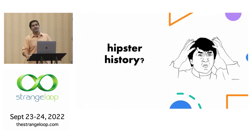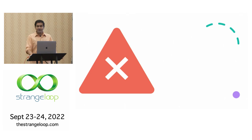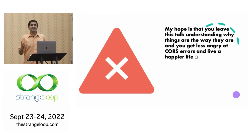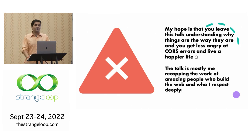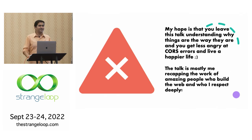The title of the talk is Hipster History. Despite living in Oakland, California, I was not high when I gave the title. To make history cool and interesting, you have to add hip, cool stuff to it — otherwise no one listens. Like Hamilton, you've got to do something. My real hope is that you leave this talk understanding why things are the way they are in CORS. No one involved in CORS defends it — it is awful. But you'll hopefully get less angry and live a happier life as a web developer. I'll be recapping the work of a lot of giants in the field — browser developers, W3C people, people who invented the web. I write stories and make jokes, but these are all people I respect deeply. No disrespect — it's just a mark of respect.